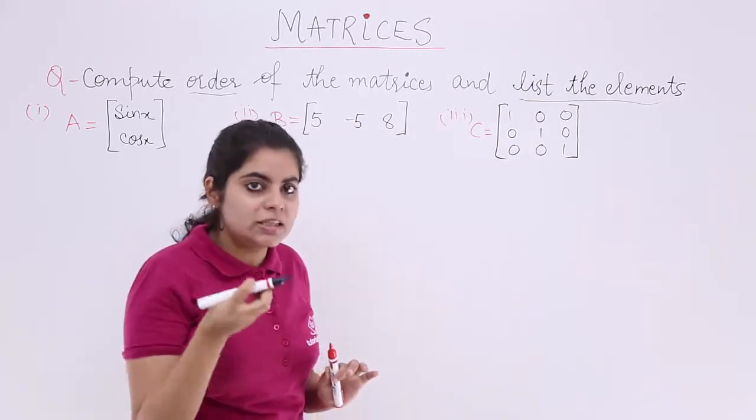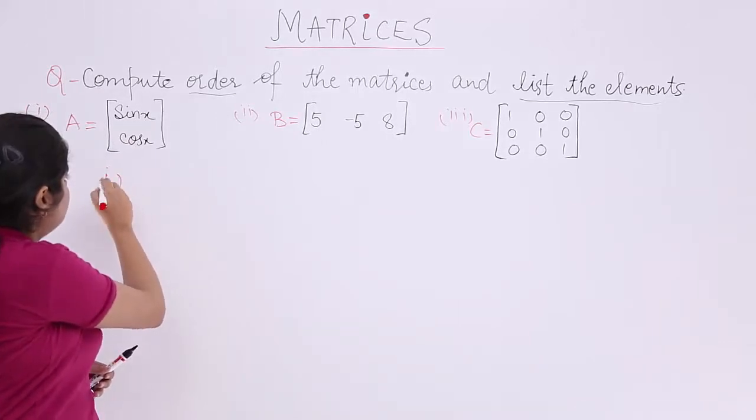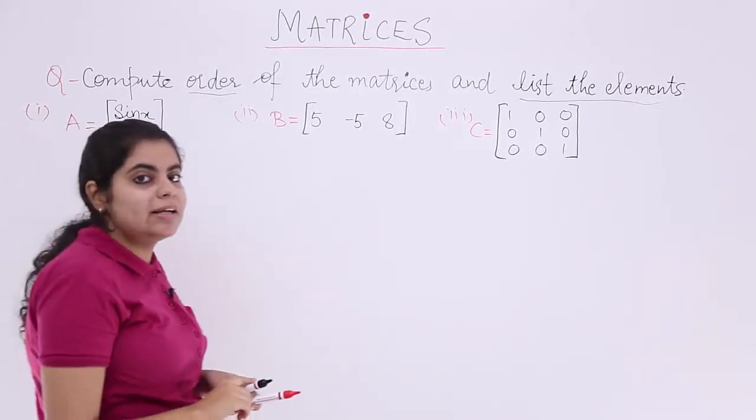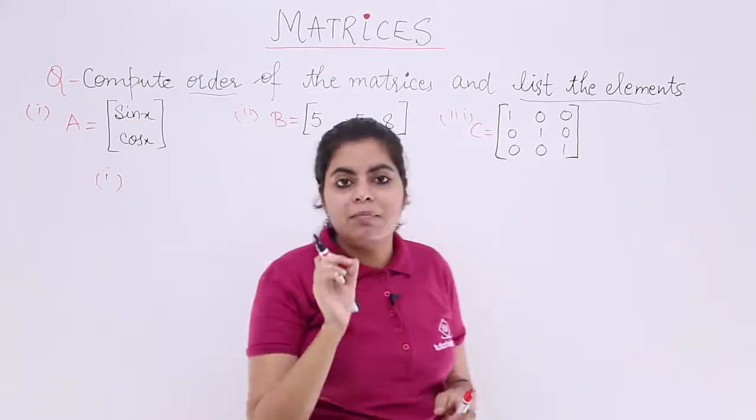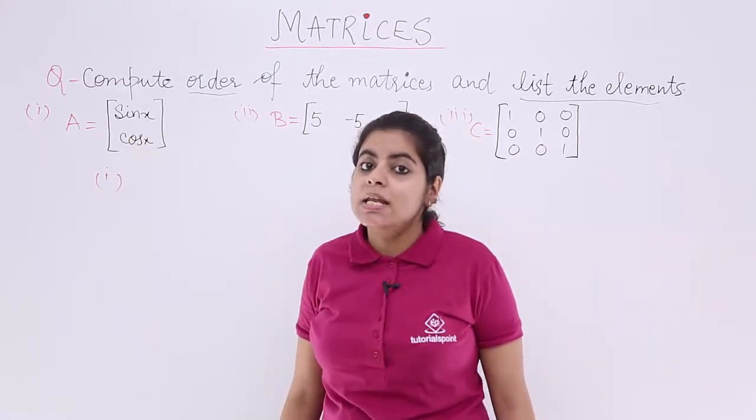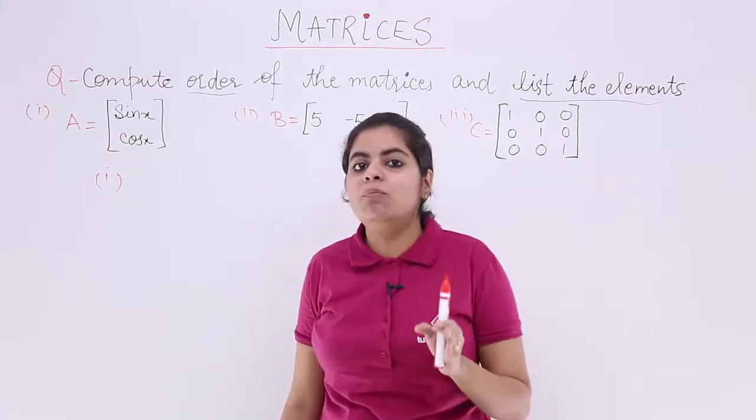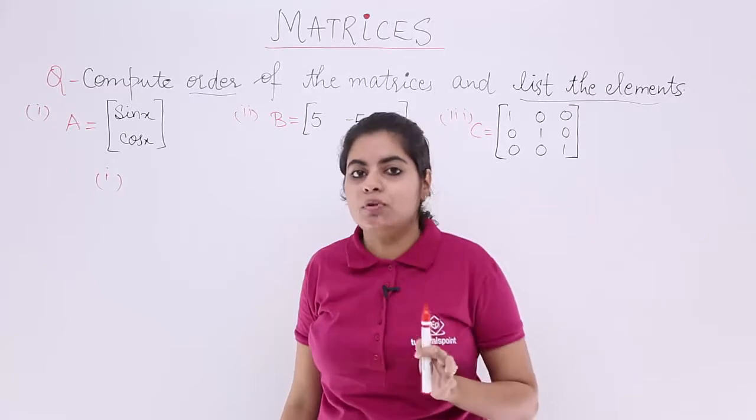Let's get started with the first one. Matrix A has sin x and cos x given. Now order you know is M into N, the number of rows into number of columns.